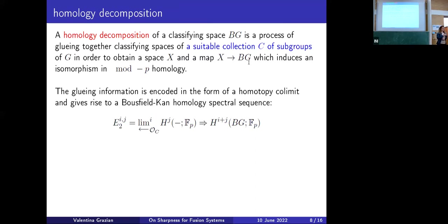This gluing comes in the form of a homotopy colimit, connected to a so-called Bousfield-Kan homology spectral sequence. You have an inverse limit computed on the orbit category of a class C of subgroups, together with a homology functor H. The key point is: if you can understand this inverse limit, then you can understand your homology decomposition and thus BG and the p-local structure of G. And here comes the definition of sharpness: Dwyer in 1998 said that a homology decomposition is sharp if, when you compute this limit, it vanishes whenever i ≥ 1 and j ≥ 0 — the spectral sequence collapses on the vertical axis.